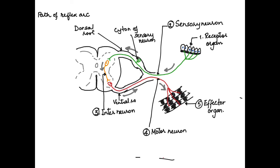Next we label the ventral root that carries the motor neuron or the efferent neuron. Next we label the central canal of the spinal cord that is located in the gray matter of the spinal cord.